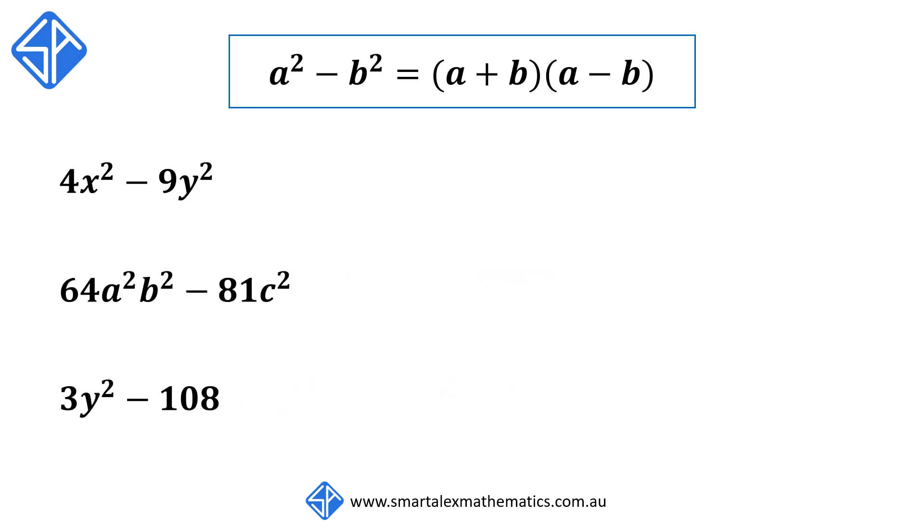Our next example, we've got 4x² - 9y². Again, we can rewrite this as (2x)² - (3y)², and this factorizes to (2x + 3y)(2x - 3y).